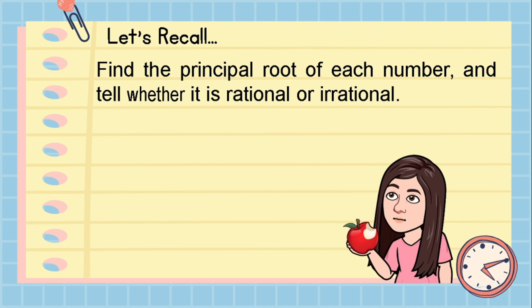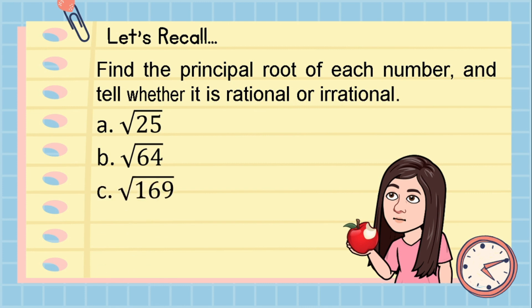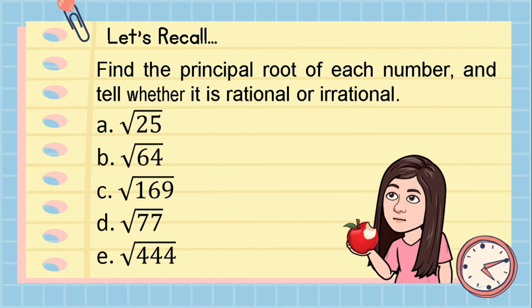Find the principal root of each number and tell whether it is rational or irrational. You may pause this video while answering. Letter A: square root of 25. Letter B: square root of 64. Letter C: square root of 169. Letter D: square root of 77. And letter E: square root of 444.